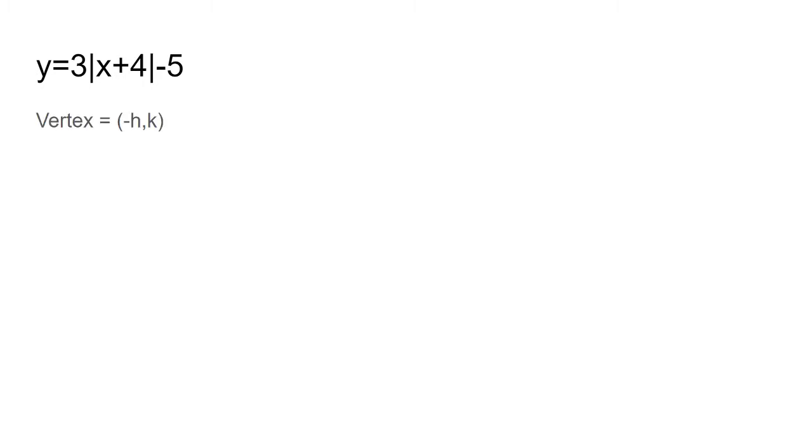So, in this example, vertex is negative h, k. Vertex is negative 4, negative 5. Slope is a. The slope is 3.